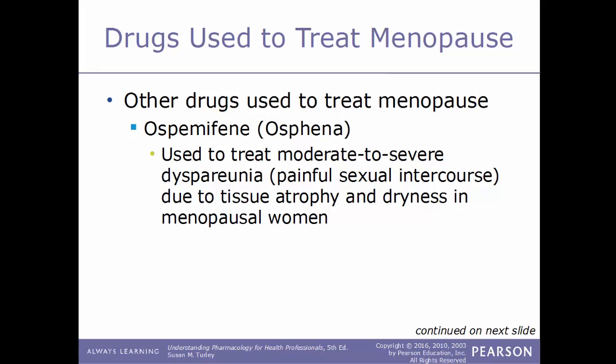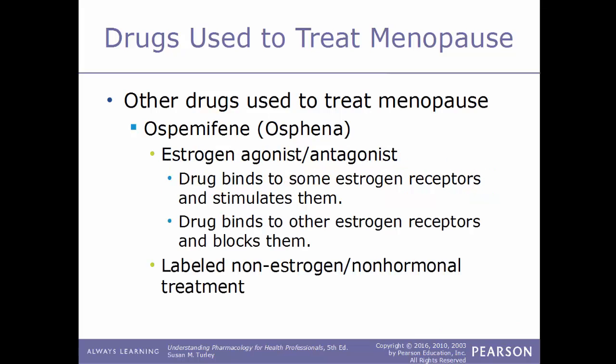Another drug used to treat menopause is ospemifene, known by the trade name Osphena. This drug treats moderate to severe dyspareunia — painful sexual intercourse due to tissue atrophy and dryness in menopausal women. It is an estrogen agonist/antagonist drug: it binds to some estrogen receptors and stimulates them, while blocking others. This drug is labeled as a non-estrogen, non-hormonal treatment.